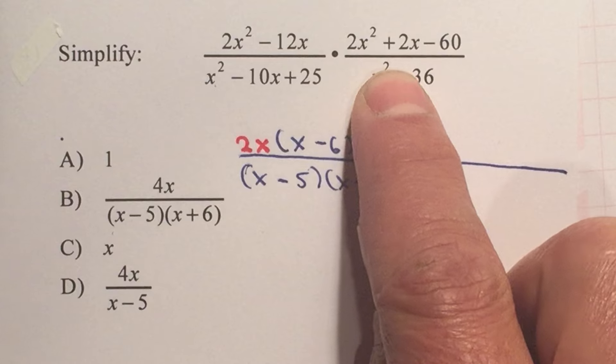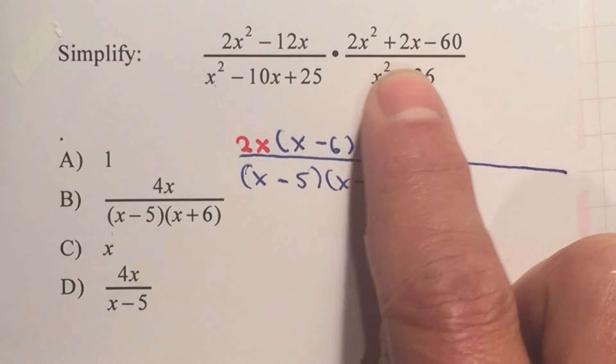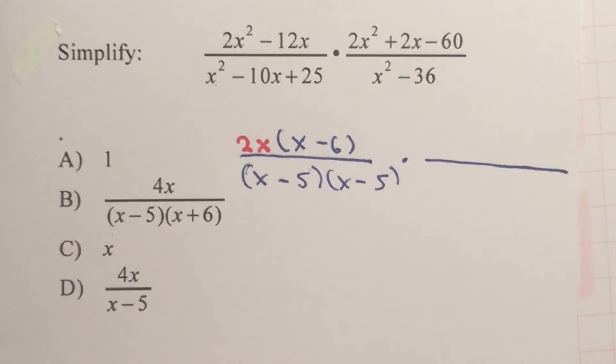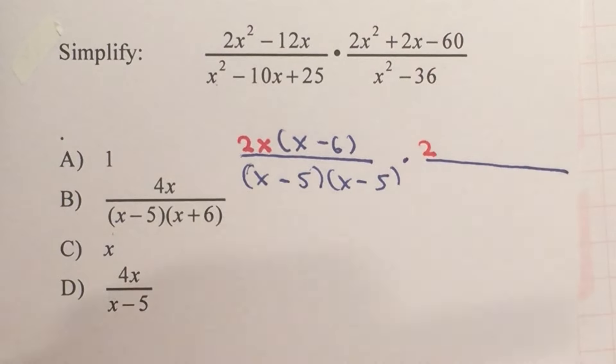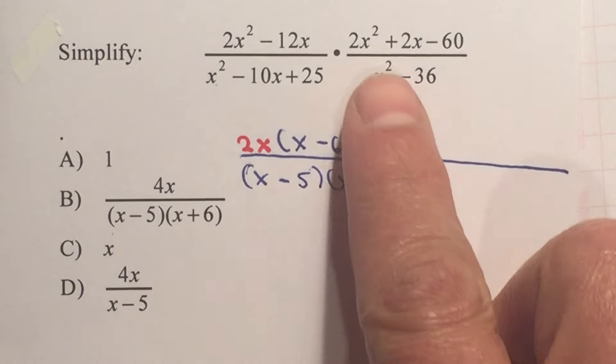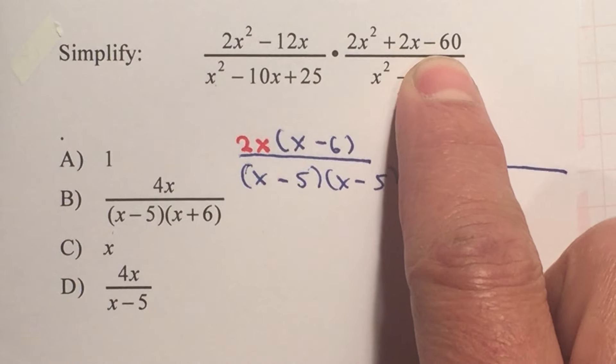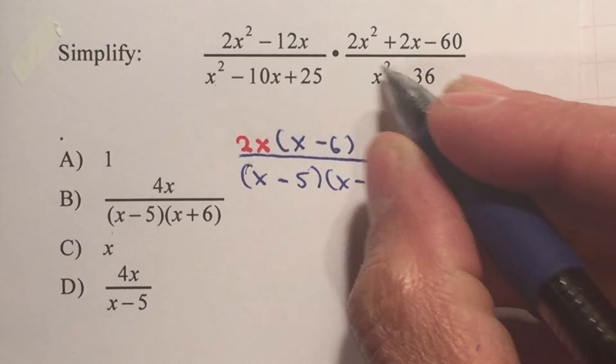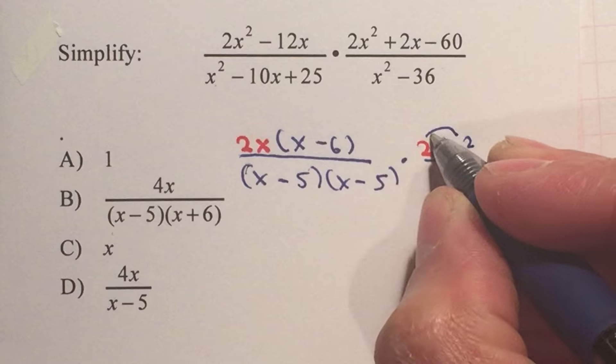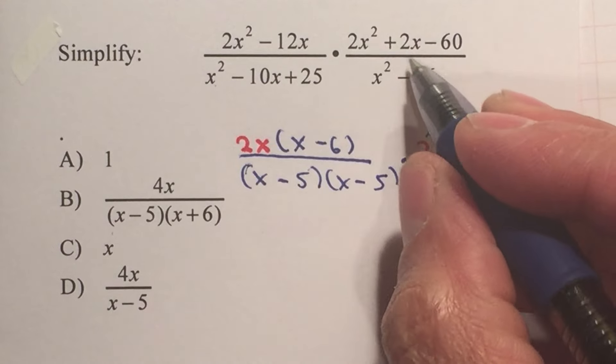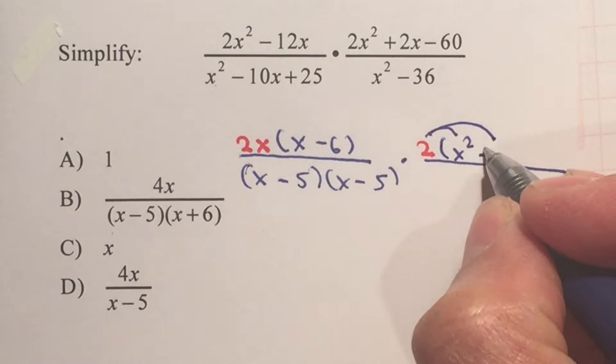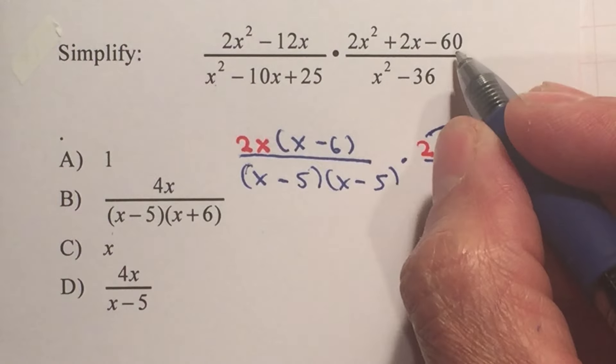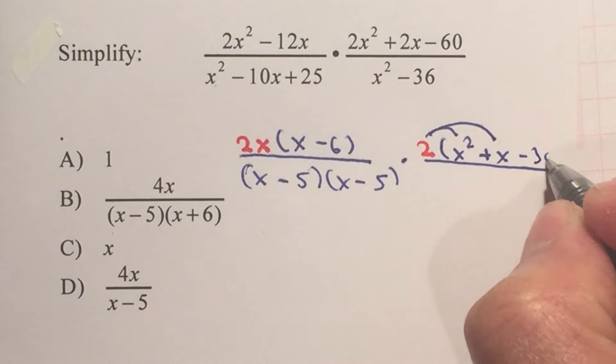Let's continue factoring the numerator. First, can we take a common factor? Is there a number that divides 2, 2, and 60? Yes, we can factor out a 2. Can I factor out an x? No, since the 60 does not have an x. And what's left behind? 2 multiplied by x squared gives you 2x squared. 2 multiplied by what gives you 2x will be plus 1x or just plus x. And 2 multiplied by what gives you a negative 60 will be negative 30.